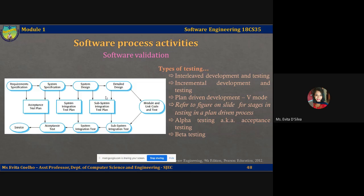Once the detailed design is in place, you finally start coding. You take one module or unit — the smallest piece of functionality delivered by your software system — write code for it, and immediately test it. This is the code-and-test practice: you do not leave testing until the end when the system is ready for deployment. Rather, you test each module as you code it. Once done, you integrate some modules with interfaces between them to create a subsystem, then use the subsystem integration test plan — built from system design and detailed design — to execute the integration tests.